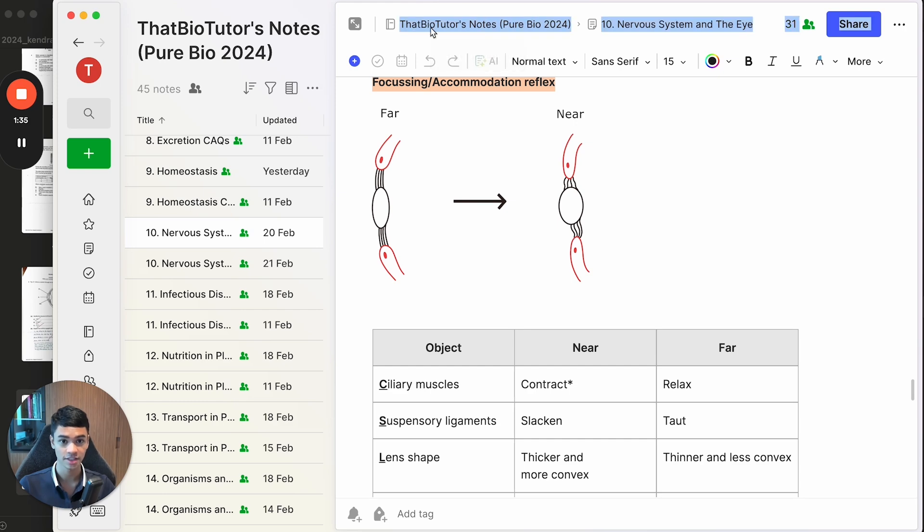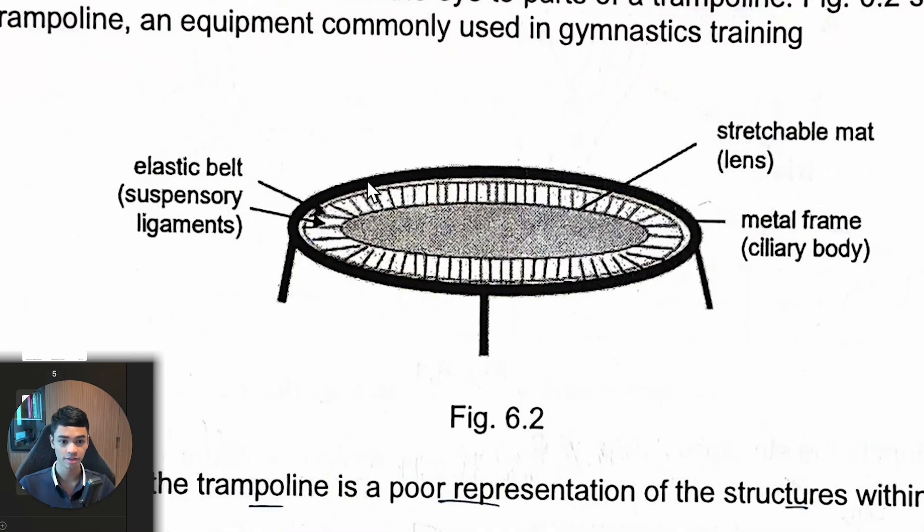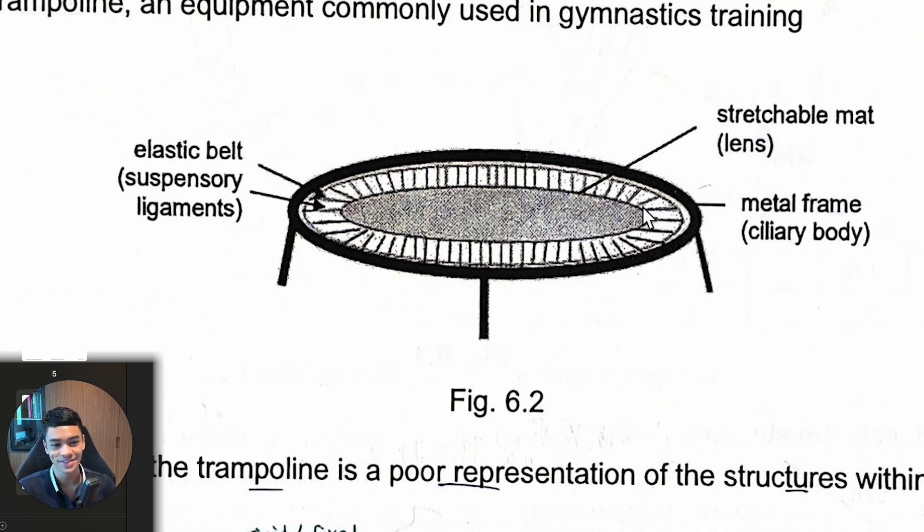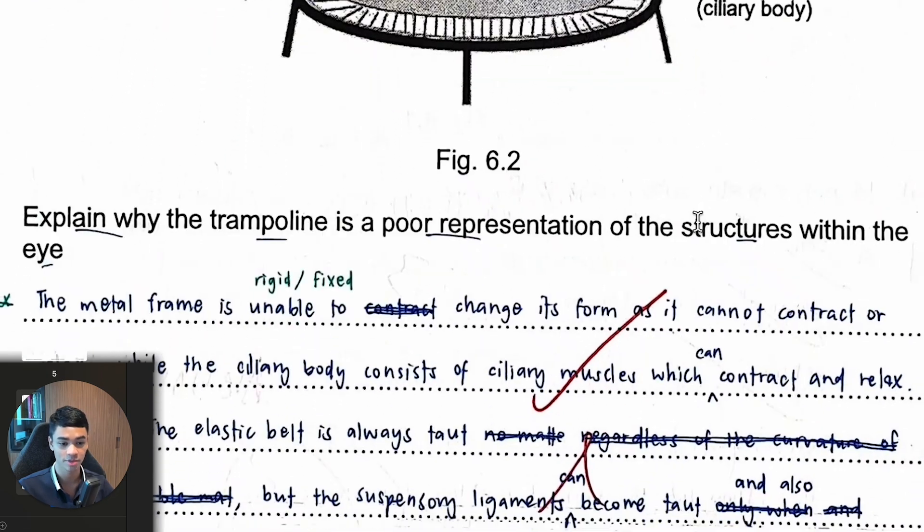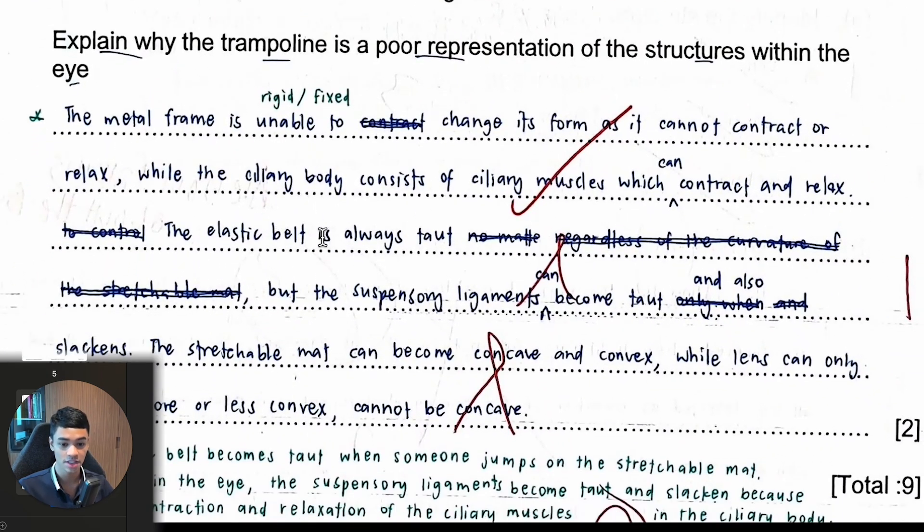Let's compare that to here. The metal frame is the ciliary muscles, all these lines are the elastic belt suspensory ligaments, and then this in the middle is the lens. They give you all the answer already. If I've set a question I won't be so nice. You realize that the outside ring is rigid, it cannot change, so that's correct. Next one, you said elastic belt is always taut.